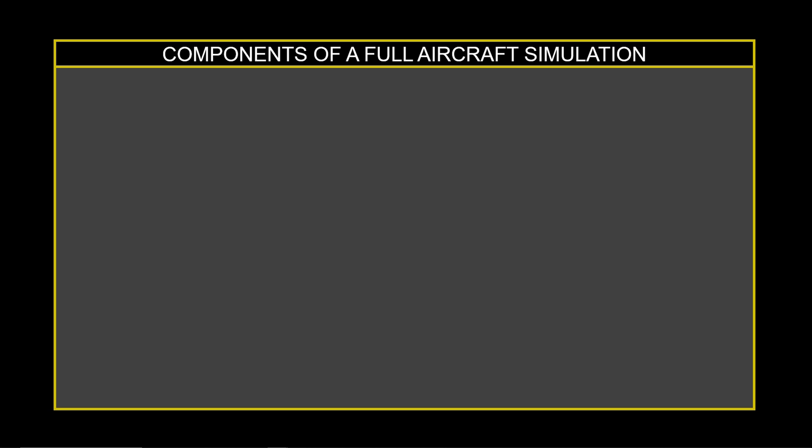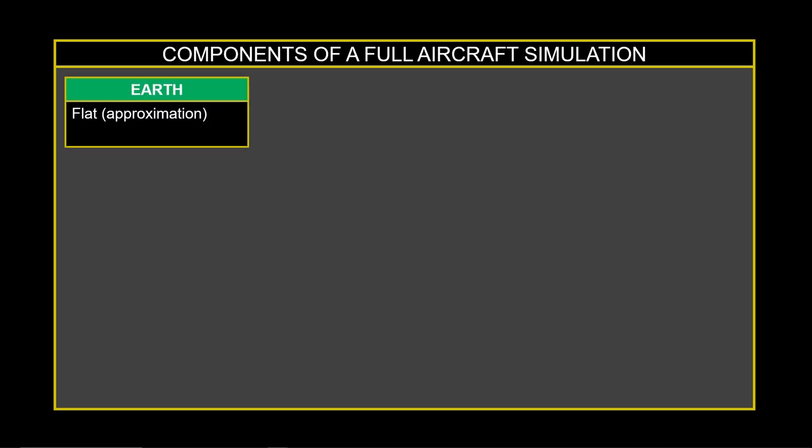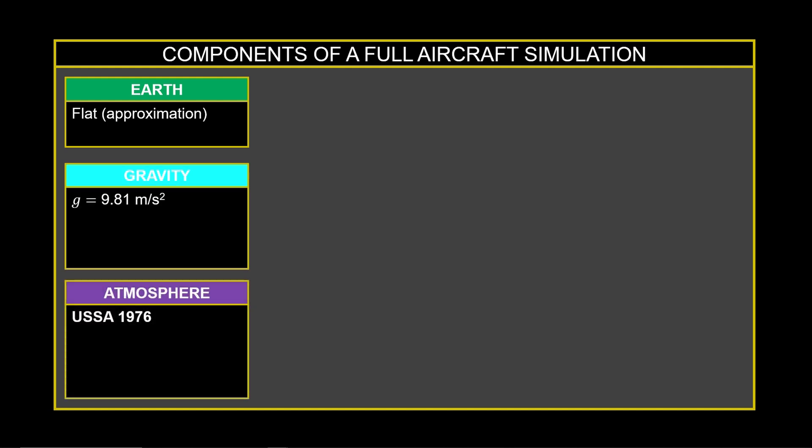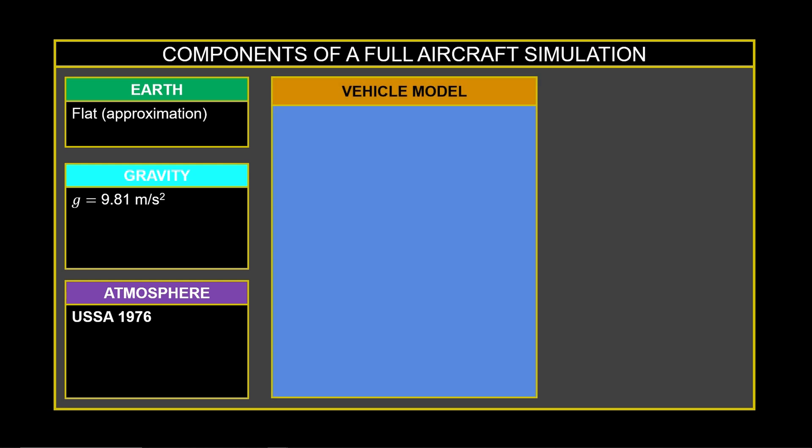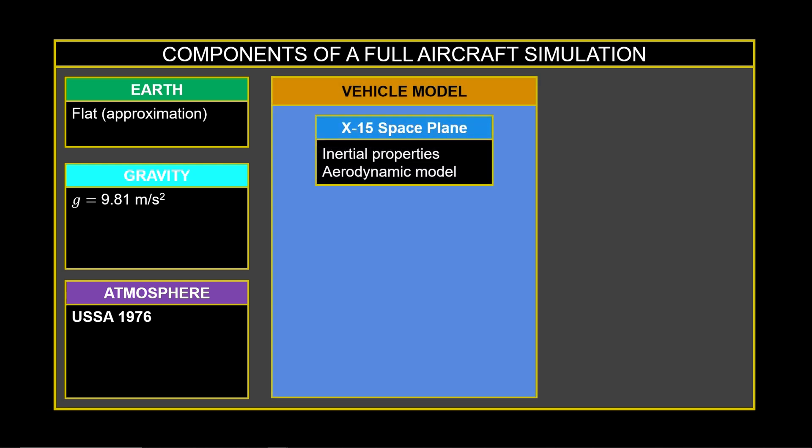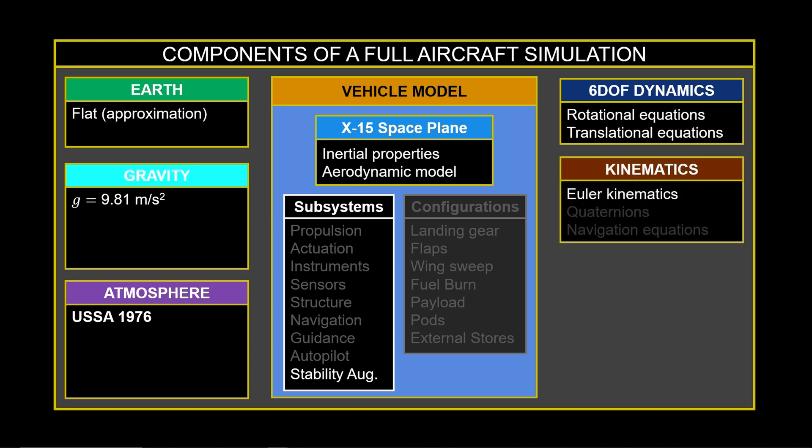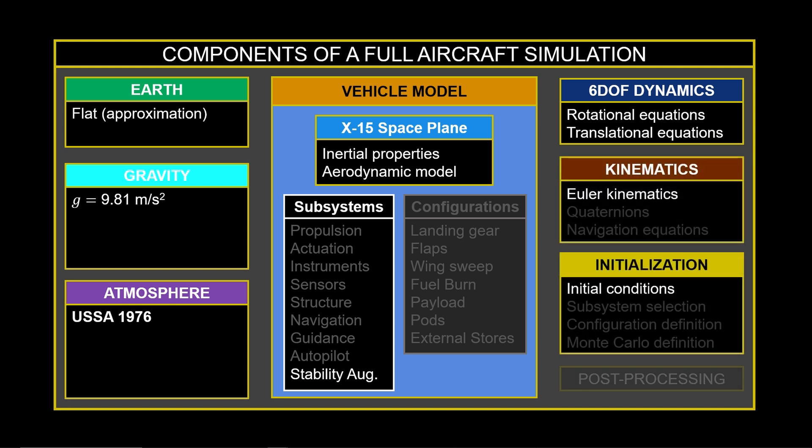We'll work from our Python-based 6DOF with a local flat earth approximation where gravity is constant. We use the 1976 atmospheric table. The vehicle is the X-15 with inertial and aerodynamic properties. We'll also have the stability augmentation system, the focus of this lesson, the 6DOF flight dynamics, Euler kinematics, initial conditions, and post-processing.